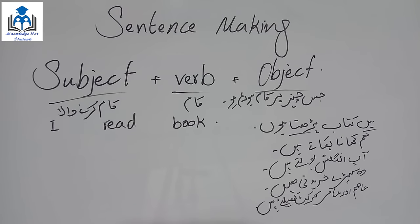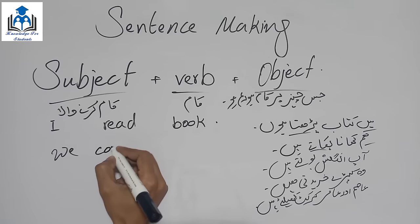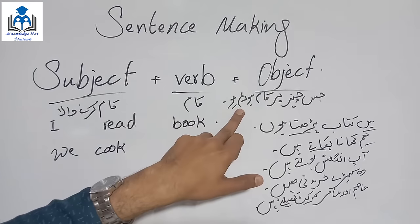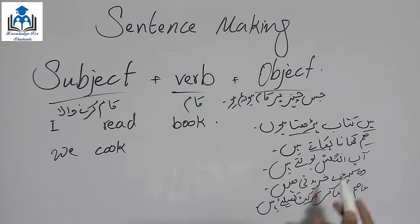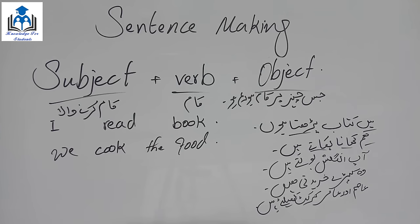Second statement: 'ہم کھانا پکاتے ہیں' (We cook food). Who does the action? ہم — 'We'. What do we do? پکاتے ہیں — 'cook'. What do we cook? کھانا — 'food'. So: We cook the food. Your statement is complete — ہم کھانا پکاتے ہیں in English is 'We cook the food.'